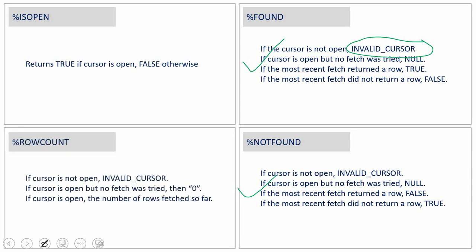ROWCOUNT should not be used before opening the cursor because no memory is allocated and no fetch operation has been performed, so Oracle cannot know how many records were fetched. After opening a cursor but before any fetch, ROWCOUNT returns zero; from the first fetch onward, it keeps incrementing for every successful fetch operation.